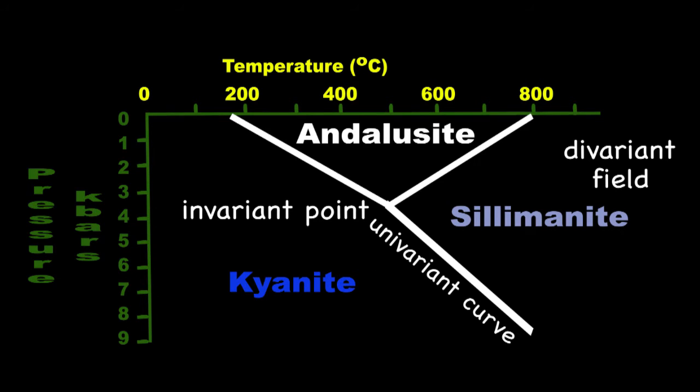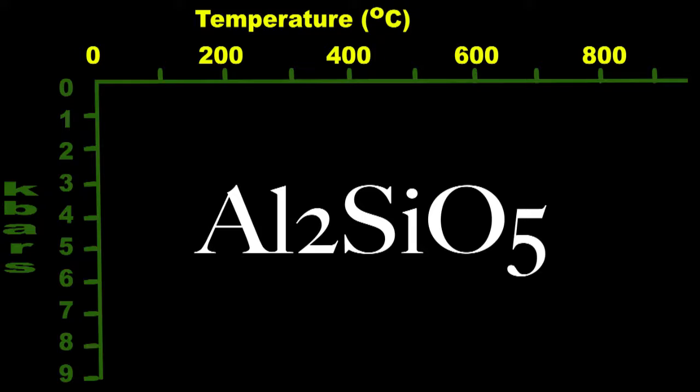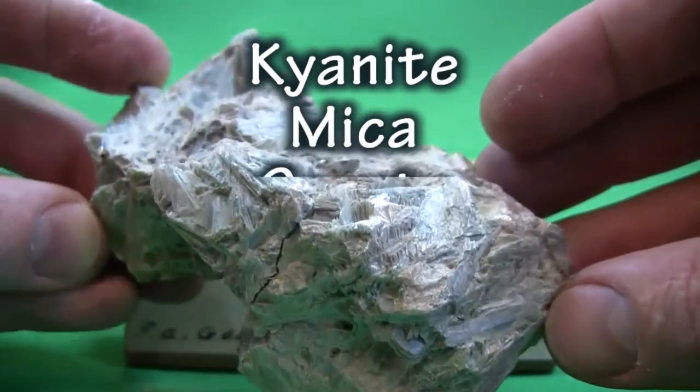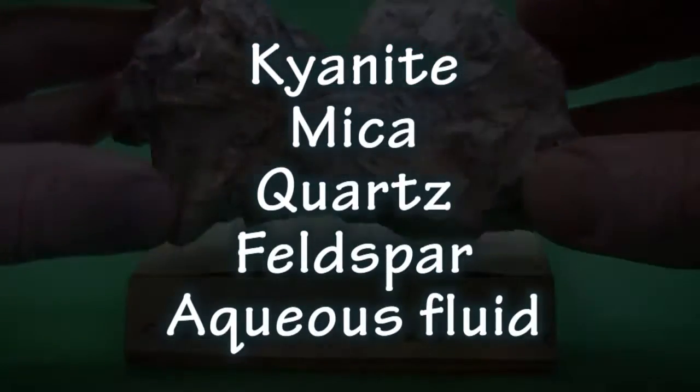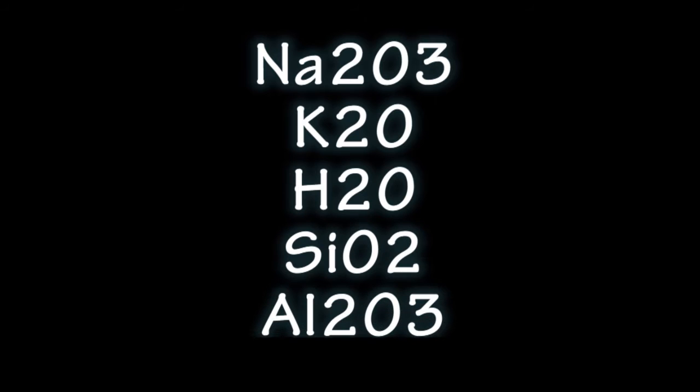Let's step the complexity up a notch more. So far, pressure and temperature have been our only variables. But what if we add more compositional variation than just H2O or just Al2SiO5? Let's say we're in the kyanite divariant field, and we have kyanite plus mica, quartz, feldspar, and an aqueous fluid. We're up to 5 phases in this rock system. We can make all these phases from the chemical components of Na2O, K2O, H2O, SiO2, and Al2O3.